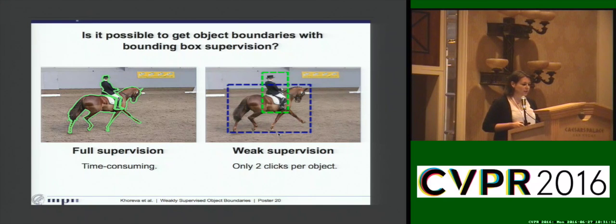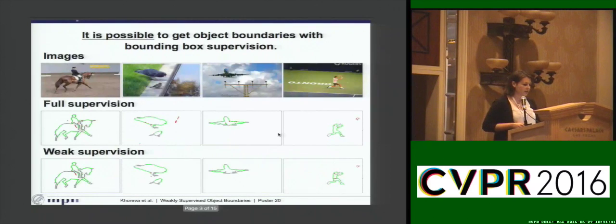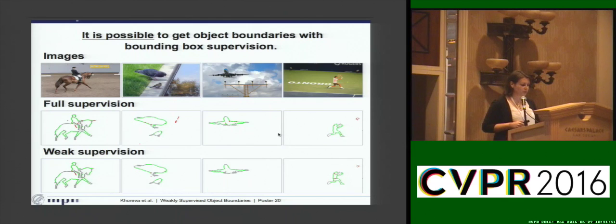So we wanted to answer the question: is it possible to get object boundaries just with bounding boxes? And the answer is yes. Here you can see qualitative results produced by the boundary detector trained with full supervision and with weak supervision. Green depicts true positives, red false positives, and gray missing recall. As you may see, you can hardly observe any differences between full supervision and weak supervision.